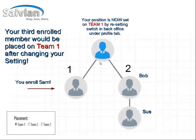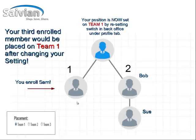Now, to get your third person on board to become a founder, you're going to switch your position to Team 1. So the placement setting will go to Team 1, and the next person you enroll, Sam, will come down under Team 1. So now you've got your two on the right side and one on the left. If you keep it on Team 1, your next members will come down this leg as well.